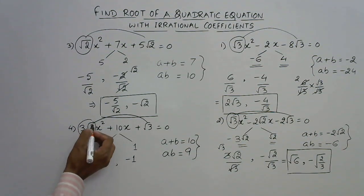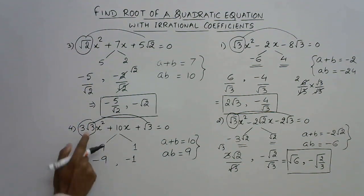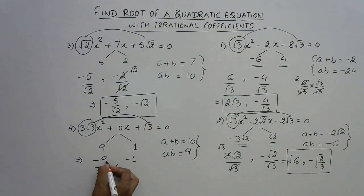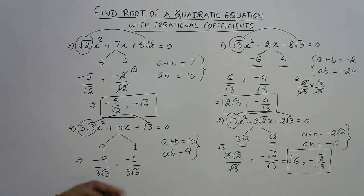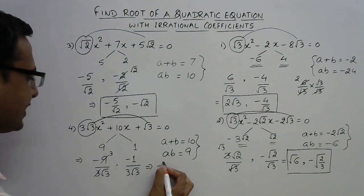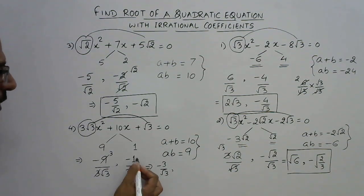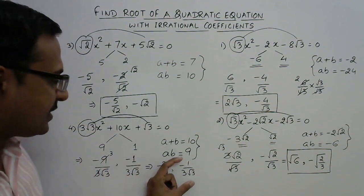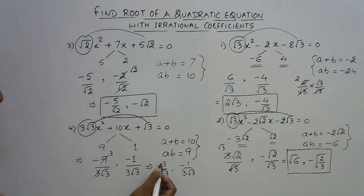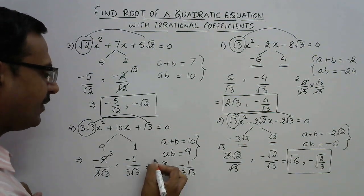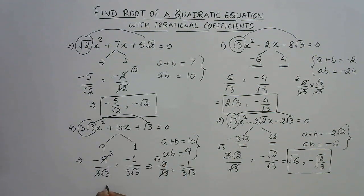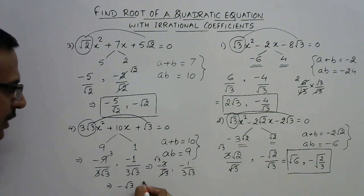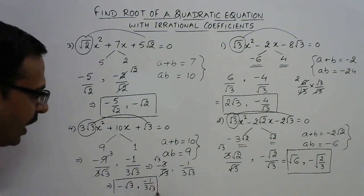The final step is to locate the coefficient of x², which is 3√3, and divide both numbers by it. So we have minus 9/(3√3) and minus 1/(3√3). For the first: 3 cancels with 9 giving minus 3/√3, and since √3 cancels with 3 in the numerator, the answer simplifies to minus √3. For the second, minus 1/(3√3) — the numerator and denominator have no common factor, so the answer is left as minus 1/(3√3). The two roots are minus √3 and minus 1/(3√3).